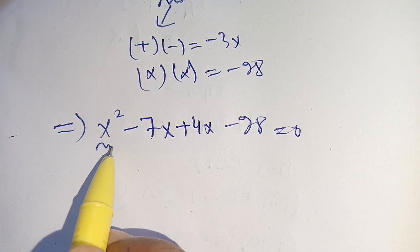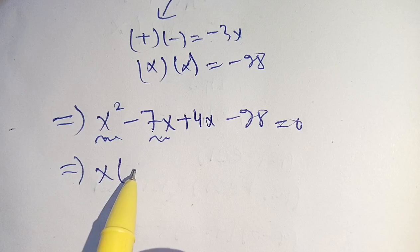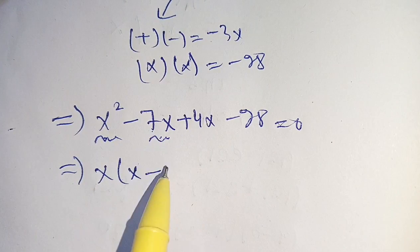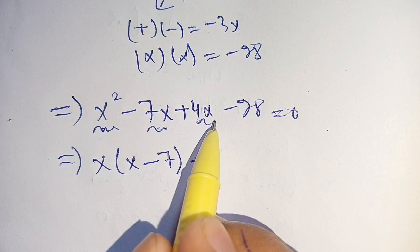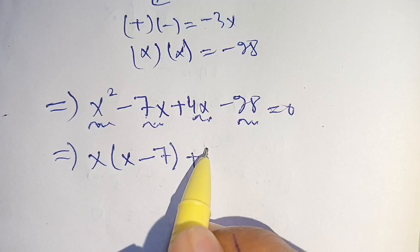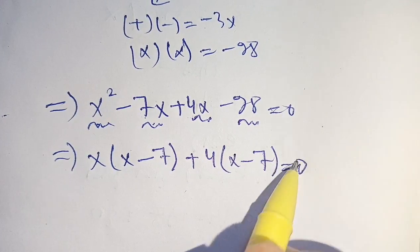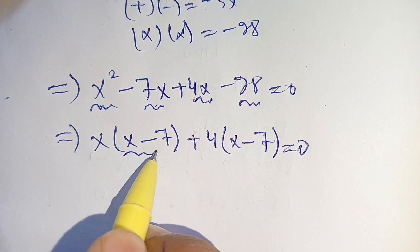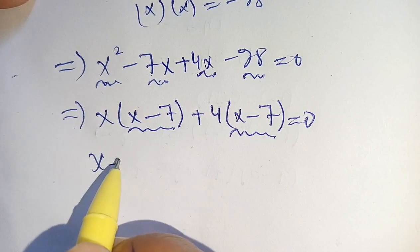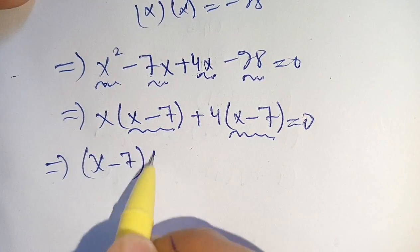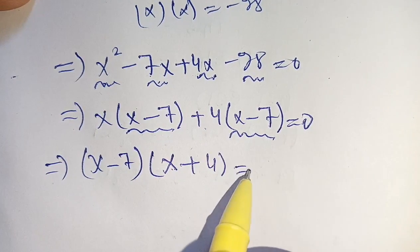In the next step we take out x from the first two terms, giving x times (x minus 7), and we take out 4 from the last two terms, giving 4 times (x minus 7), so the equation becomes (x minus 7)(x plus 4) is equal to 0.